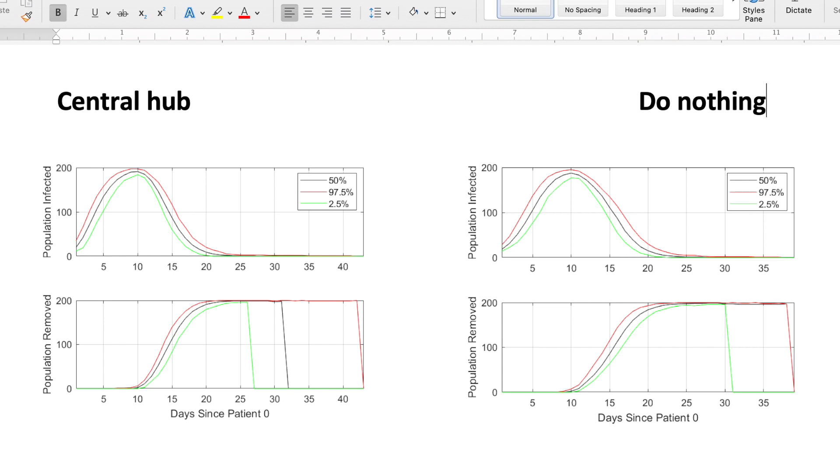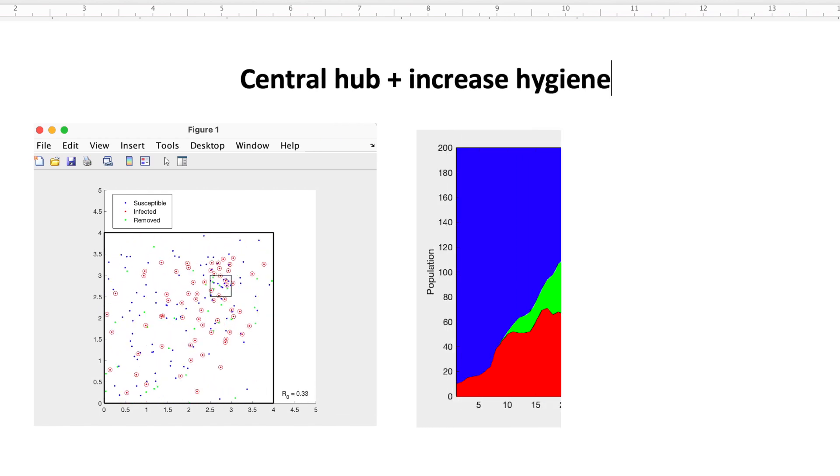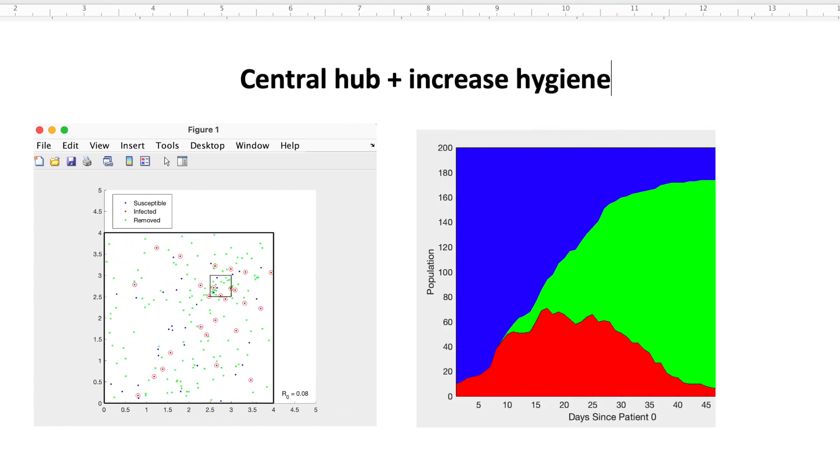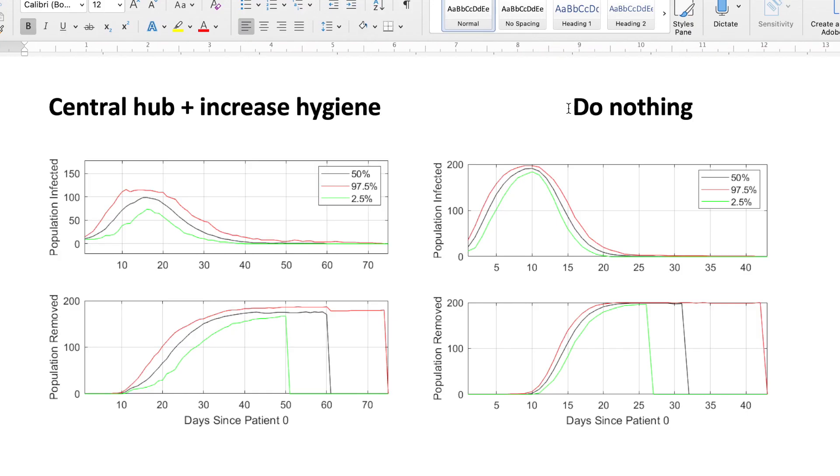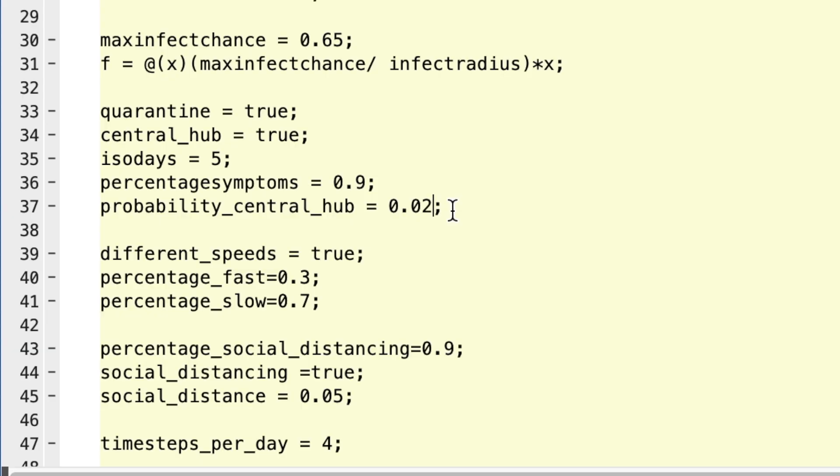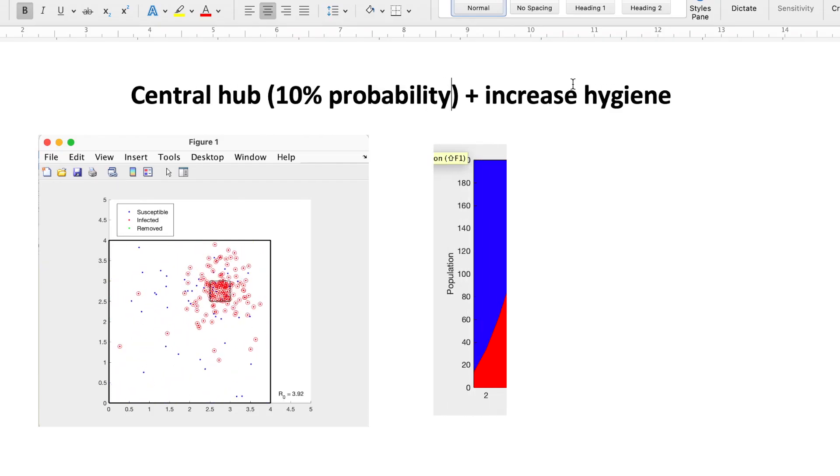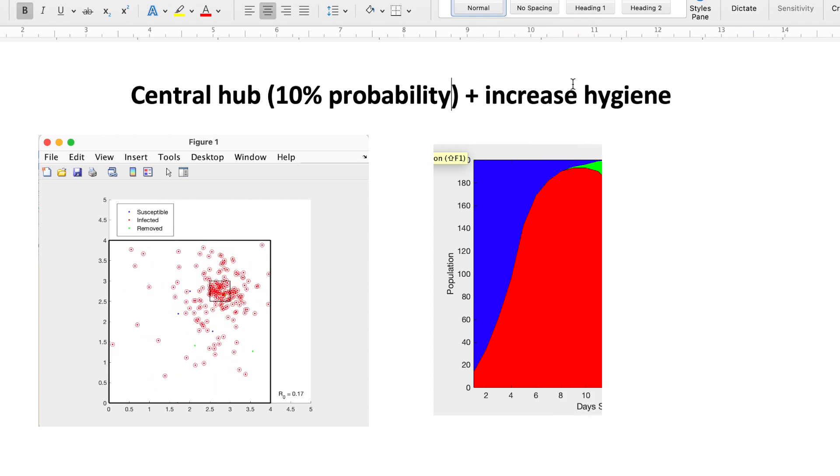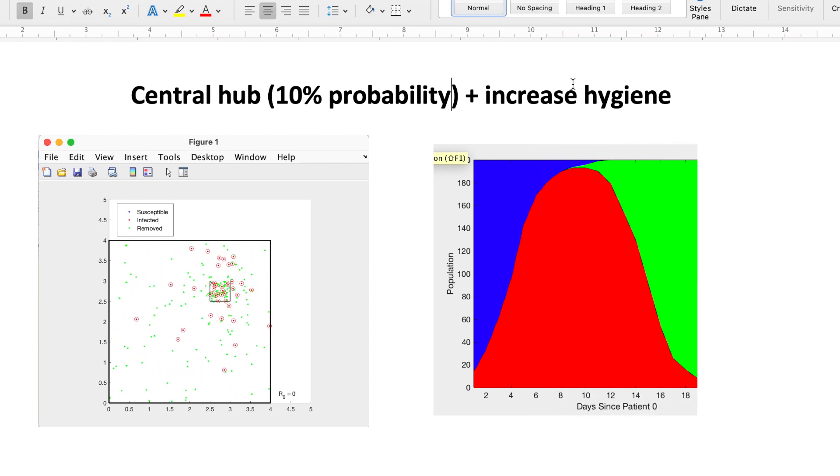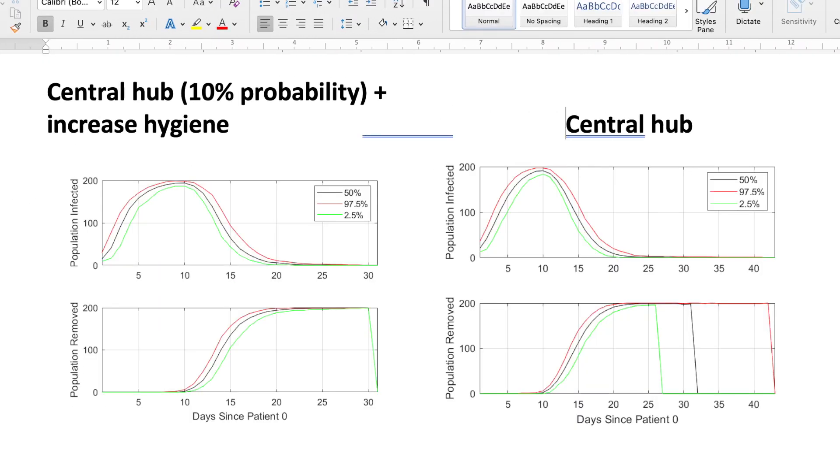Next, we halve the infection radius and decrease the infection chance. As expected, the infection curve was flattened in comparison to the first central hub run when no hygiene measures were put in place. Lastly, the probability of visiting the central hub was increased to 10 percent. Although hygiene measures were still in place, the higher probability made the infection curve peak, emphasizing the drastic effects that hot spots such as markets and squares can have on the spread of a disease.